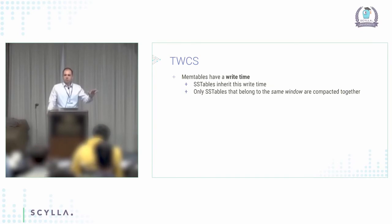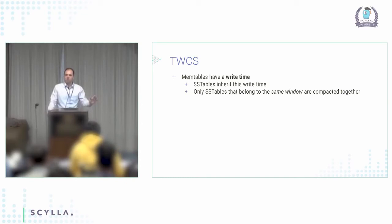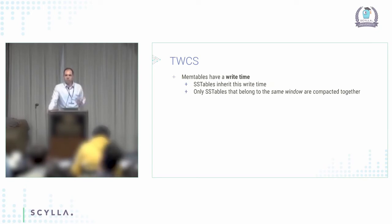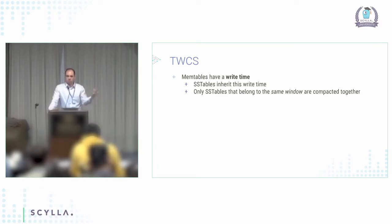The holy grail of time window compaction strategy is to allow you to drop an SSTable. With other compaction strategies, if all of your data is expired — imagine you have a 25 zettabyte table and all of it is expired, all TTL'd — you don't really know this. So you have to read every key, and if it's expired you drop it, and if it's not you write it back to the new SSTable. So with a gigantic amount of data that's all expired, you're going to have to read a lot.